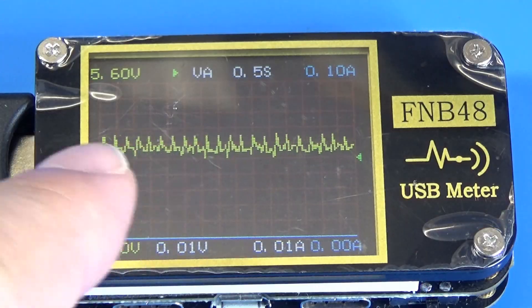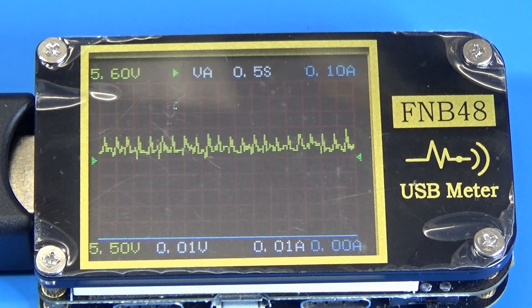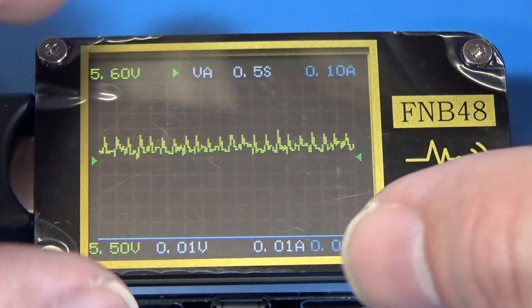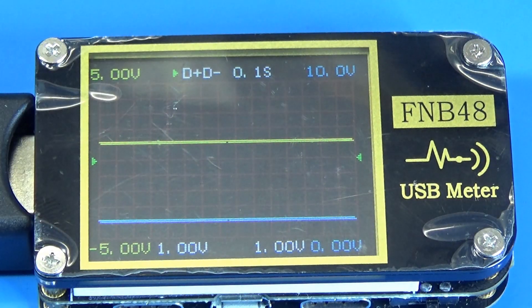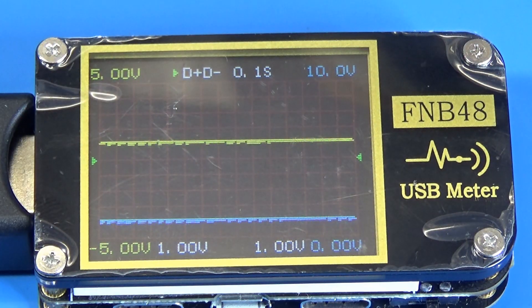Also, there is for the data plus and data minus. So dual trace oscilloscope and save the time with the setup for the power line or the data line.